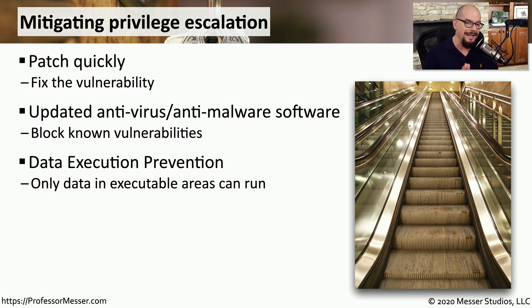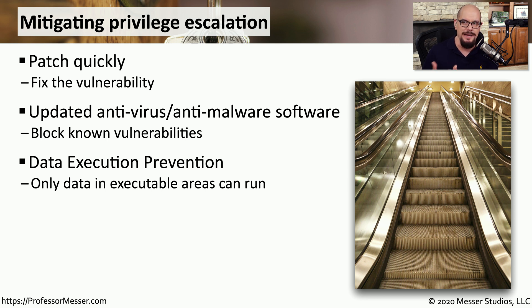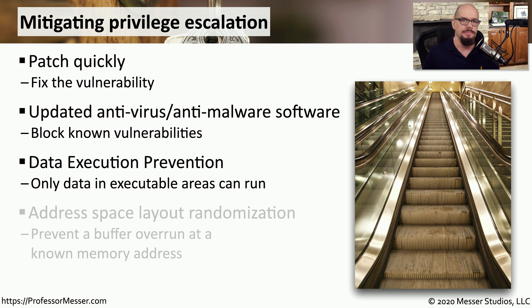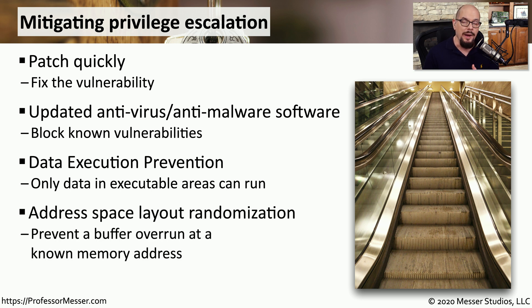One of these safeguards is called data execution prevention. It's a way to only allow applications to run in certain areas of memory where that particular function is allowed. Vulnerabilities that try to run an application from the data section of memory would be blocked using data execution prevention. Many operating systems will also randomize where information is stored in memory, so that if an attacker finds a way to take advantage of a memory address on one system, they would not be able to duplicate that on another operating system.